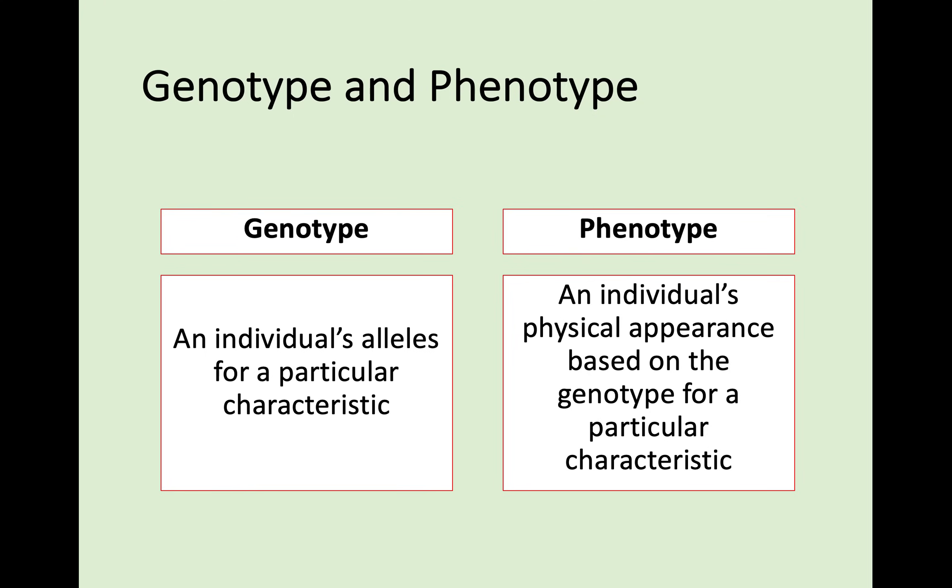Before we go any further we're going to look at some more terminology. We'll be discussing genotypes and phenotypes of different organisms. Your genotype is essentially the genes that you possess — an individual's alleles for a particular characteristic. Your phenotype is your physical appearance: what those genes have caused you to look like for a particular characteristic. A good way to remember it is the 'ph' in phenotype links to physical. Genotype is your genes; phenotype is your physical appearance.